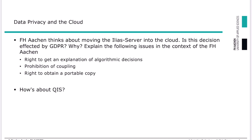Let's look at GDPR with some more examples. The right to an explanation of algorithmic decisions — what does this mean? For example, if you have an online exam and the server is evaluating the content of your answer and giving a certain number of points, you can request an explanation about those points. If you feel treated unfairly, then a human being must explain what has happened.